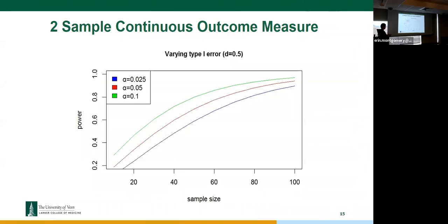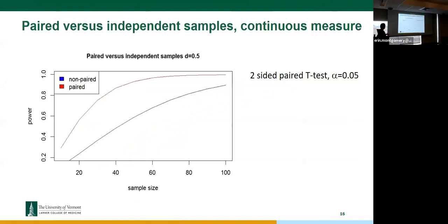This shows the effect of varying your alpha level for a fixed effect size. Raising alpha raises the power, but we don't want to do that — we want to keep alpha small. That's part of the balancing act. For example, the difference between alpha 0.05 and alpha 0.025: at 80% power you might need around 65 subjects per group at alpha 0.05, whereas at alpha 0.025 you'd need about 90 subjects per group.